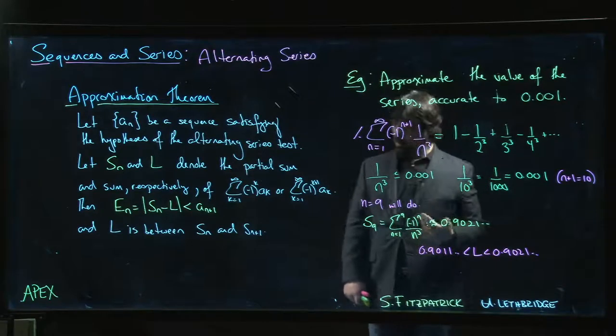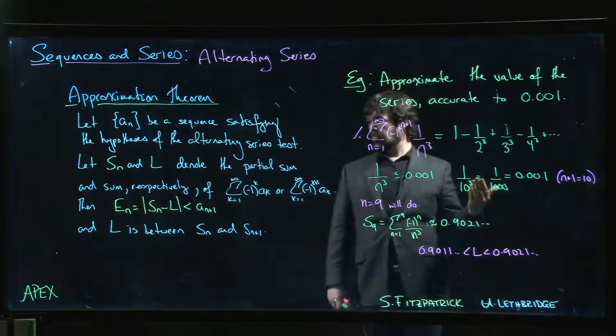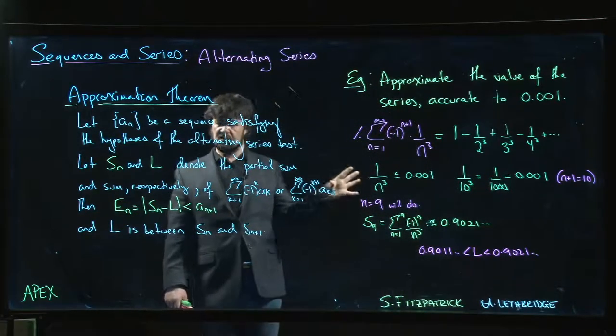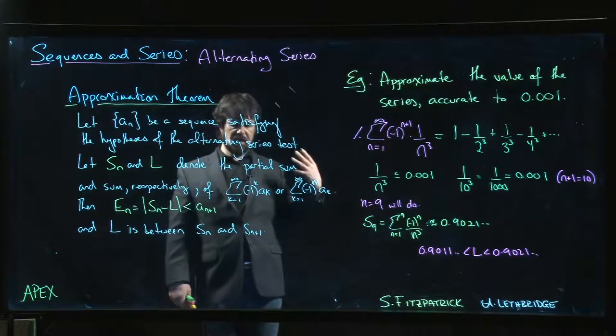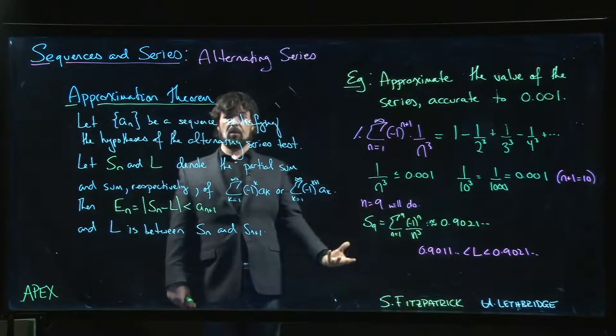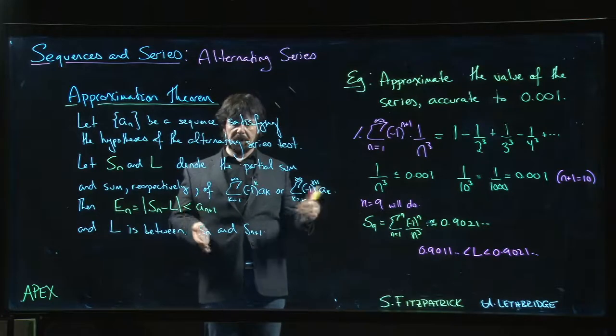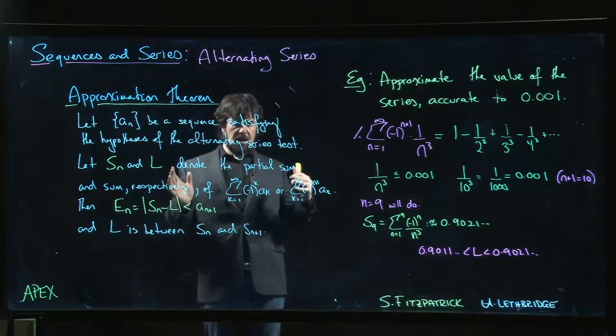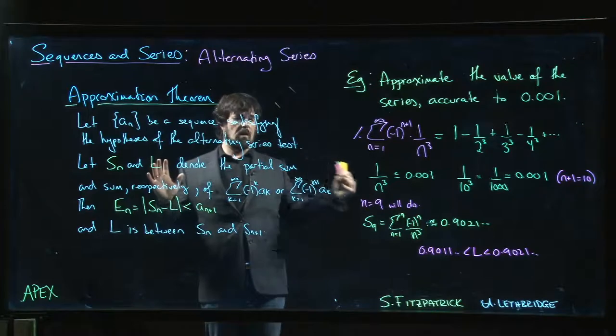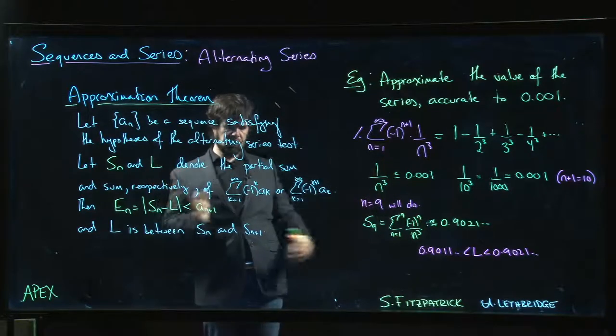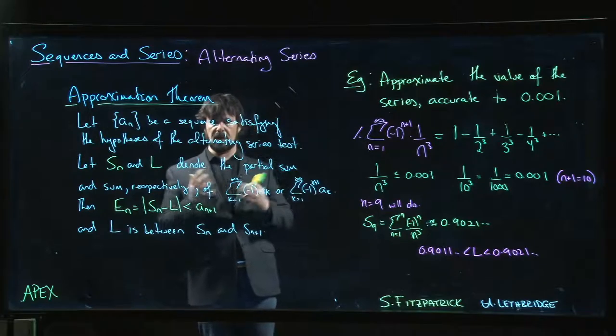So it gives you a pretty good method for approximating alternating series, but only alternating series. There's nothing quite so simple as this for series with only positive terms, because then everything is adding up and it's far too complicated. When everything is adding up, how do you figure out the contribution of infinitely many terms that are getting smaller and smaller? It really depends on how small they're getting and how fast they're getting that small - it's very complicated.